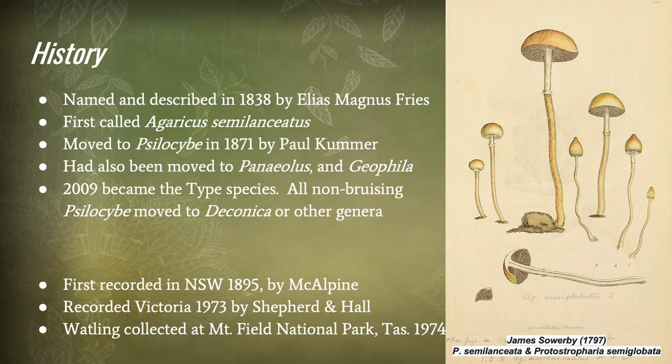Psilocybe semilanceata was named and described in 1838 by Elias Magnus Fries. It was first called Agaricus semilanceata, then moved to Psilocybe in 1871 by Paul Kummer. It has also been moved to Panaeolus and Geophila, but is now squarely back in Psilocybe. In 2009, it became the type species, and all non-bruising Psilocybe were moved to Deconica or other genera.